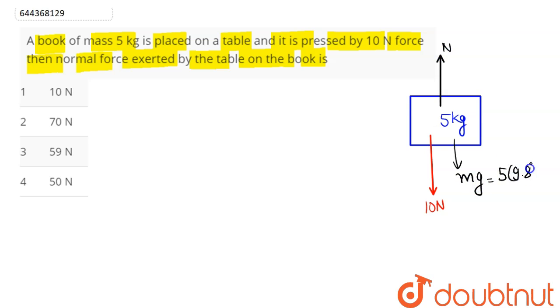So this comes here as 49 Newton. So here we can say normal reaction balances our 10 Newton plus 49 Newton. Hence the normal reaction equals 59 Newton.